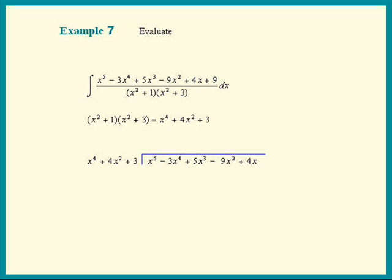Now let's do our long division. What do we put on top? That times the x to the 4th has to equal the x to the 5th, so it has to be an x.